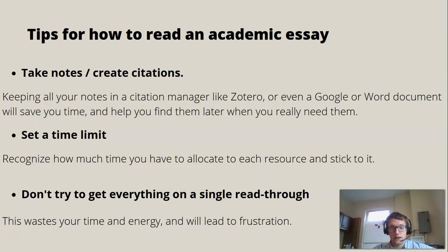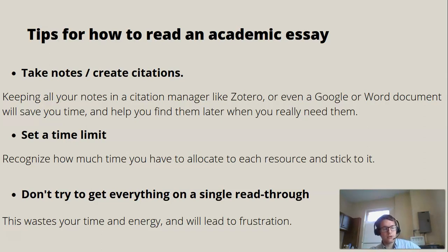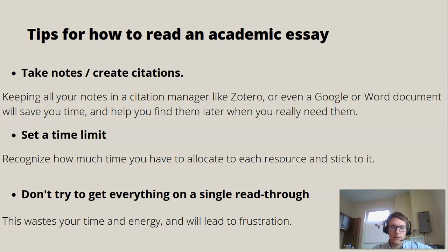But first, a few basic pointers. I think it's important to take notes and to create citations as you go for each source as you read — this will help save you time when it comes to writing your paper. If you create a correct citation from the very beginning, you won't have to go back to the source to create your reference later. I like using a Google Doc or Word document to store all my citations and notes, but you can also use a citation manager like Zotero — anything you use will save you time and help you find your notes later when you need them.